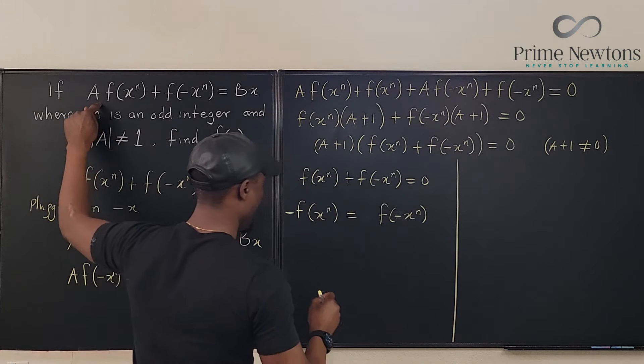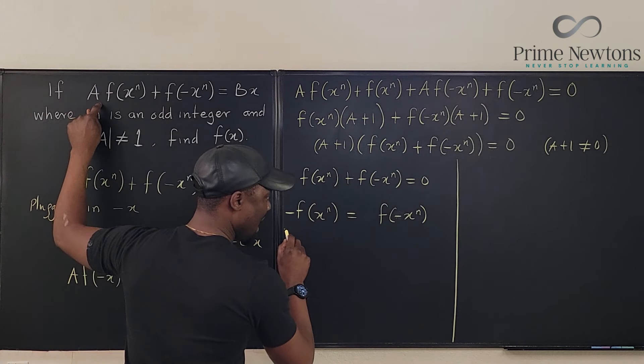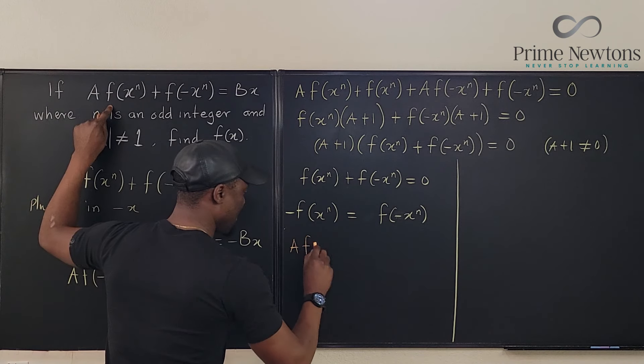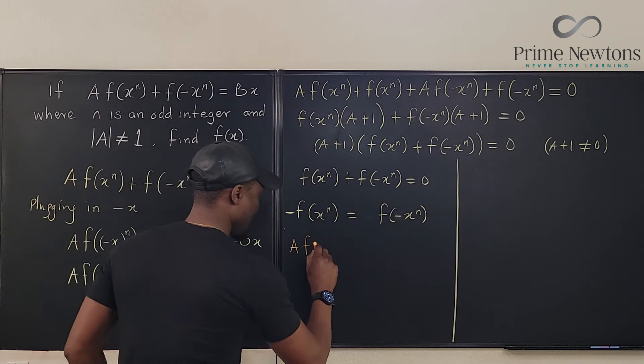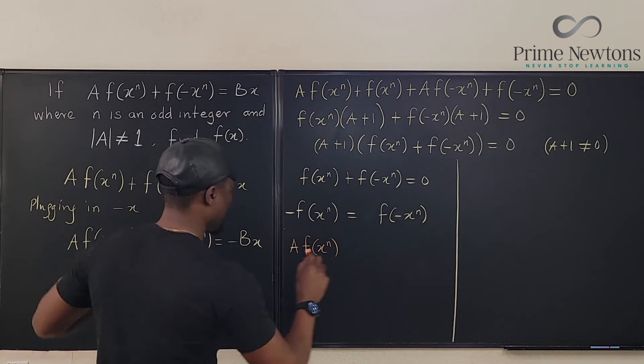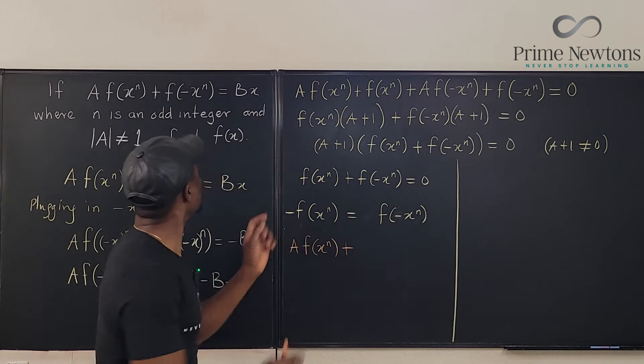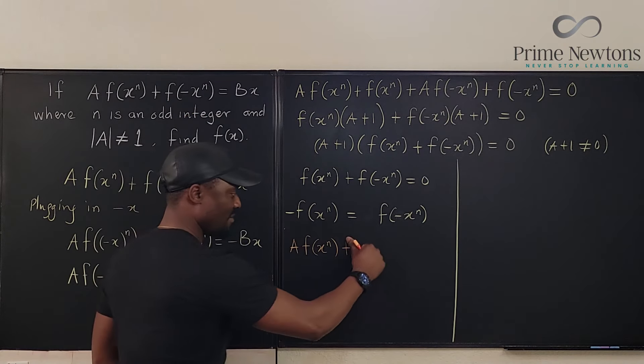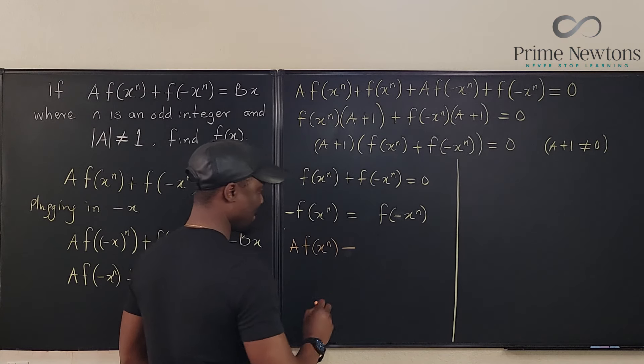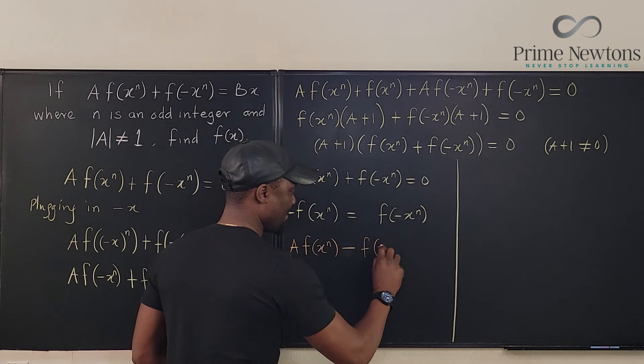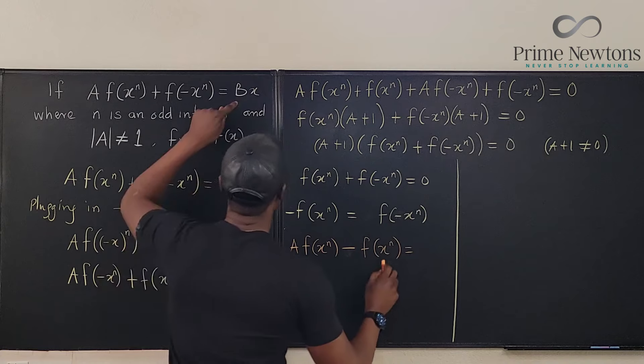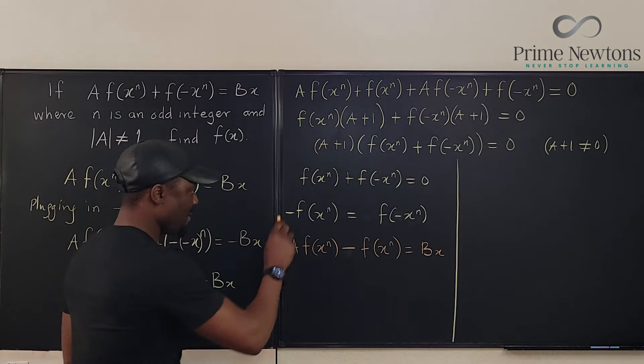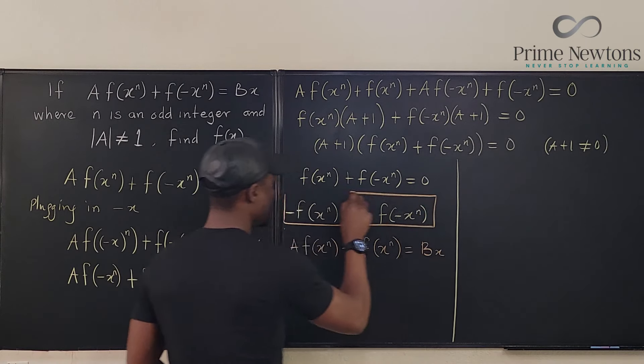So if I go back to the original equation, ta-da-da! So here I have A times f(x)^n plus, but instead of me adding this f(-x)^n, I'm going to be adding this guy, which is minus, minus f(x)^n equals bx. Let me box this so you know that it's a different thing we're dealing with here.